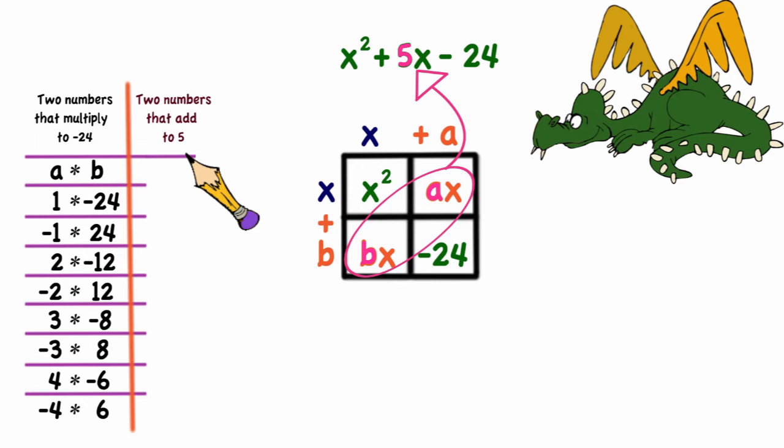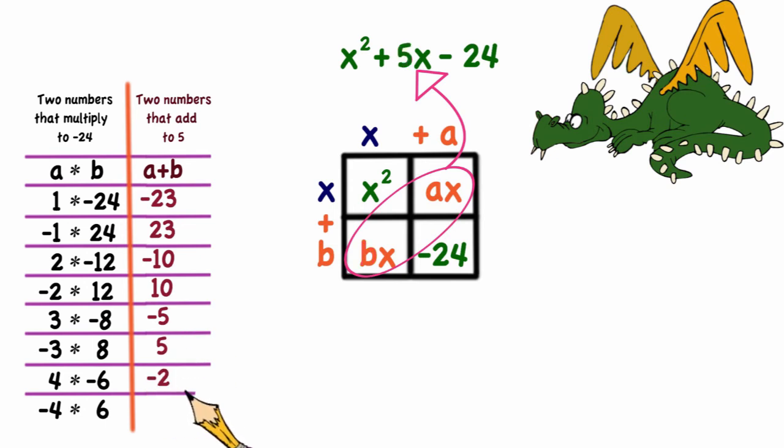So to find the multiples that solve this problem, I would simply add a and b until I get to 5. So that would give me negative 23, 23, negative 10, 10, negative 5, 5. And if I was to do the last two I would get negative 2 and 2.